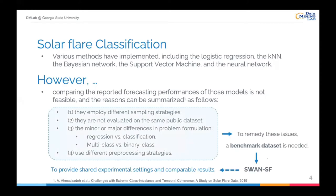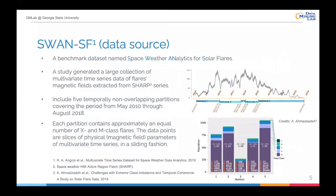To remedy these issues, a possible solution is to use the same dataset and same processing pipeline, which can compare different models fairly. Therefore, a public benchmark dataset, namely SWAN-SF, is selected in this study. The goal is to provide shared experimental setting and comparable results.